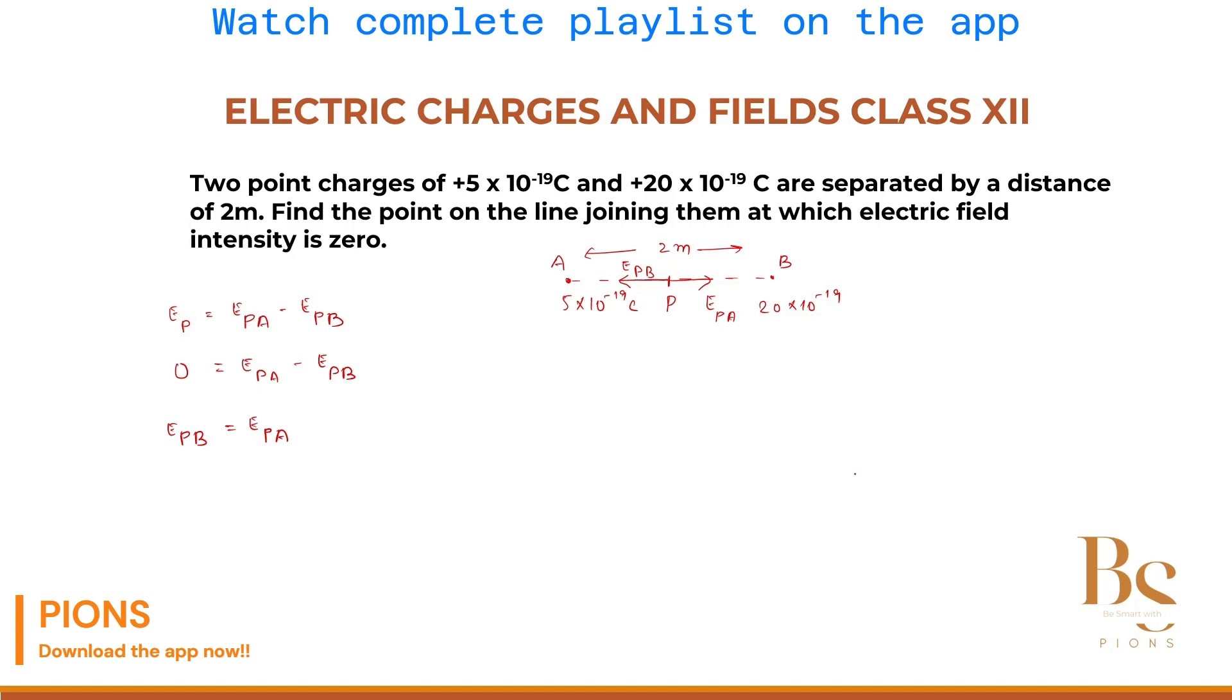EPB and EPA we will put here. First of all, let me remind you, the electric field formula is 1 by 4 pi epsilon 0, Q upon R square. 1 by 4 pi epsilon 0 is nothing but K. Q is the charge whose electric field you are finding and R is the position of that point from the charge where you are finding the field. So this is our general formula.